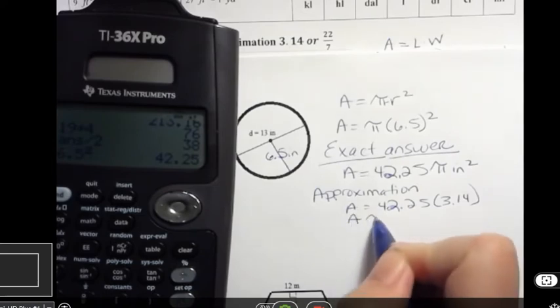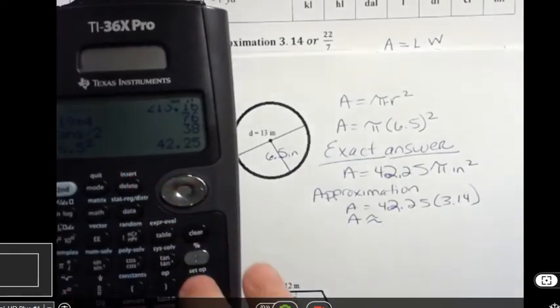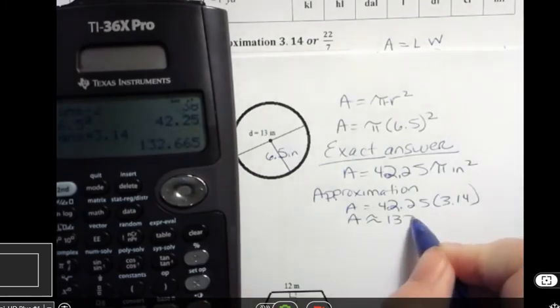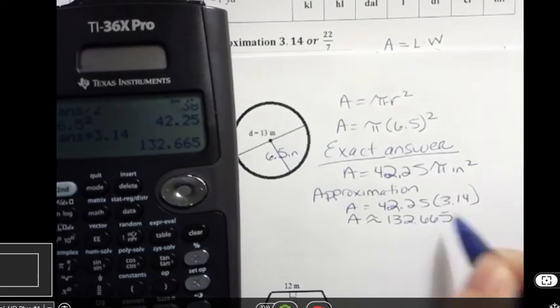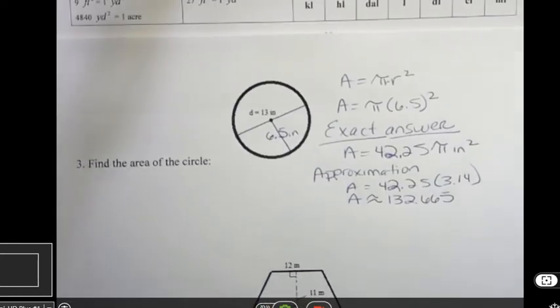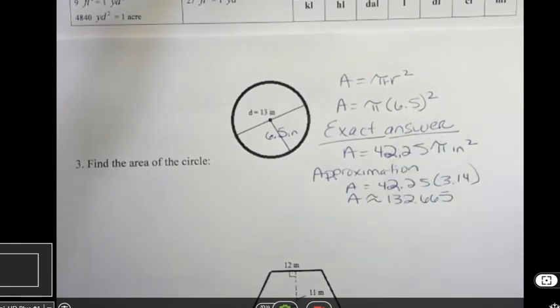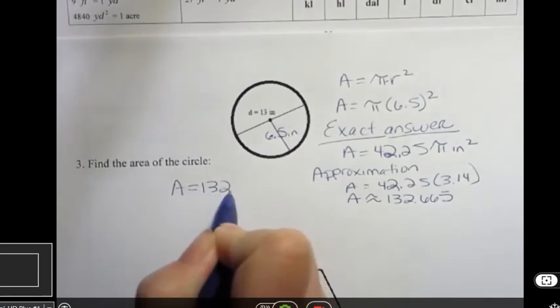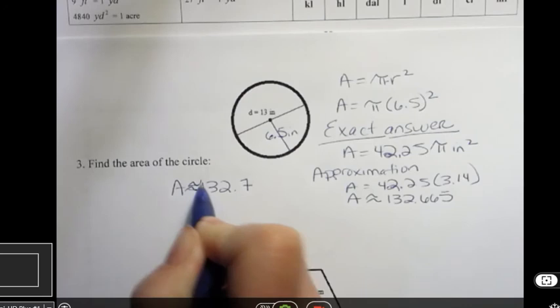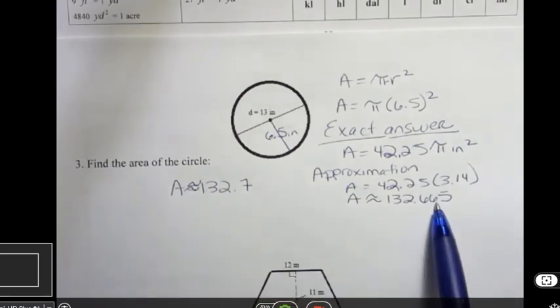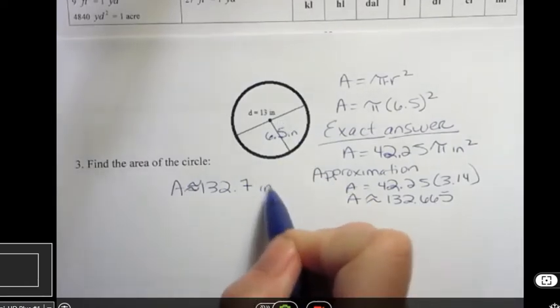Now, if we want the approximation, we're going to go ahead and multiply 42.25 times 3.14. So the approximation, we put the pi value in, and we approximate. And then, instead of equals, we're going to put an approximation sign times 3.14, and that's going to give me approximately 132.665. And again, I'm going to go back and round that off, depending on what whatever I'm working with asked me to round it to. So because I had one decimal point there, I'm going to go ahead and round it and say that that's 132.7. I'm going to put the approximation symbols in there. Because one beside 6 was a 6, so that would round that up to 7. And again, that's inches squared.